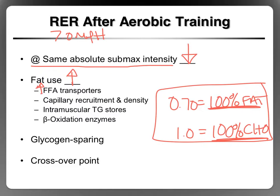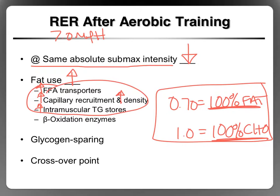We also get an increase in capillary recruitment — your capillaries are not all open at the same time, and with training you're better able to use the capillaries you have. If you can open more capillaries, you can bring more blood flow and deliver more fat to the muscle cells. We also get an increase in capillary density, so not only do we use more of the capillaries we have, we have more capillaries. Additionally, we get more intramuscular triglyceride stores — more triglycerides stored right in the muscle — and all three adaptations help increase the FFA delivery rate.